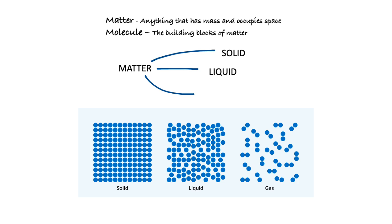Liquid is a form of matter where there is a little space between the molecules. Examples include water, oil, and fruit juice. You can pour water and transfer it from one cup to another, but you cannot pour solids. In solids there is no space for the molecules to move, whereas in liquids the molecules can move around. Then the third form is gas.